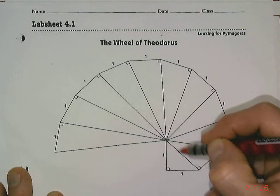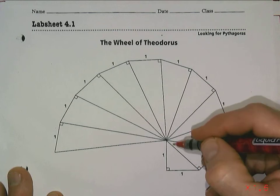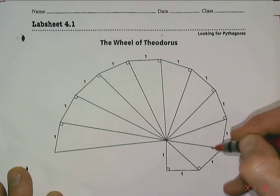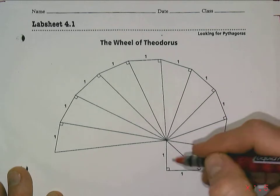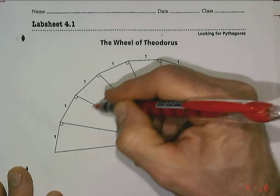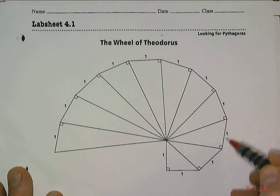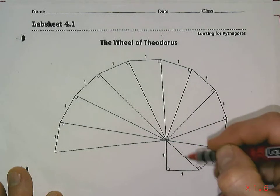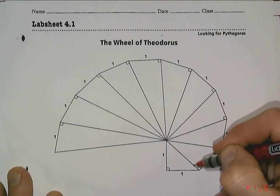Each of these is almost like a seashell shape, and each of these hypotenuses gets longer as we extend around. Although one leg of each triangle continues to be one all the way around, the other legs come from the previous hypotenuse.